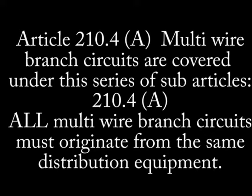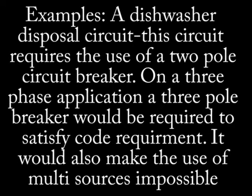Article 210.4 paragraph A. Multi-wire branch circuits are acceptable under this article. All multi-wire branch circuits must originate from the same distribution equipment. An example of this would be a dishwasher disposal circuit. This circuit not only requires that both legs originate from the same panel, but the two circuits are powered by a two-pole breaker.